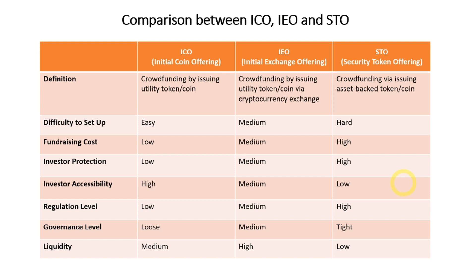Regulation level is lowest for ICO as previously mentioned. It is relatively easy for IEO, and regulation is the highest for STO. In terms of governance, it is very loose for ICO, which is why a lot of scams tend to happen. IEO projects are generally governed by the exchange, while for STO, it is the government of the country itself that monitors the STO project, which can be quite strict.